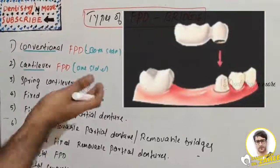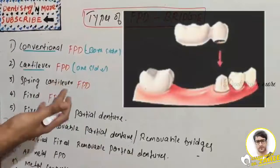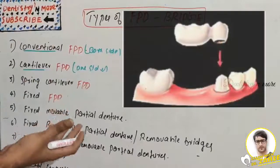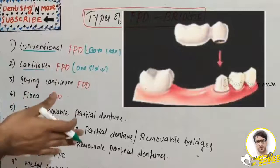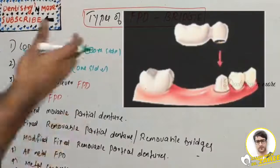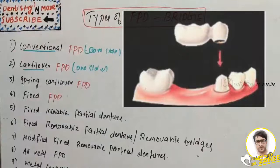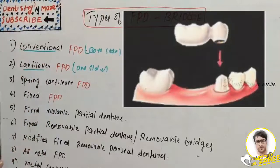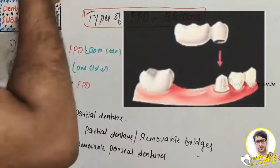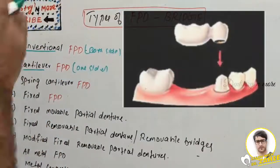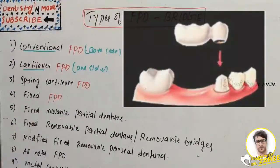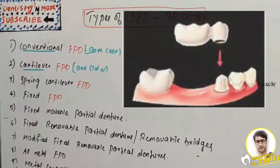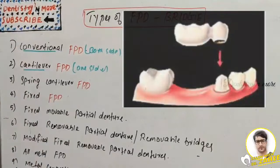The advantages of cantilever FPD: it is a very conservative design, especially when a single abutment is involved. When secondary abutments are used, parallel preparation can be easily obtained because the abutments are adjacent. However, the main problem is it produces torquing forces on the abutment with no balancing forces, cannot be used to restore a long span, and minor design errors can affect the abutments significantly — making it very technique-sensitive.